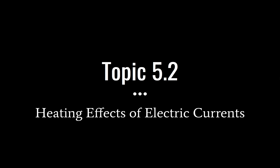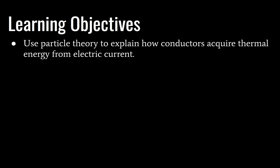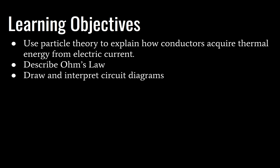Today we're going to take a look at topic 5.2, which is in regard to the heating effects of electric currents. Let's look at our learning objectives. First, you need to be able to use particle theory to explain how conductors acquire thermal energy from electric current. You need to be able to describe Ohm's law, which should be reviewed from topic 10 physics. You need to be able to draw and interpret circuit diagrams — we're not going to cover that in great detail today, but we will cover it by the end of topic 5.